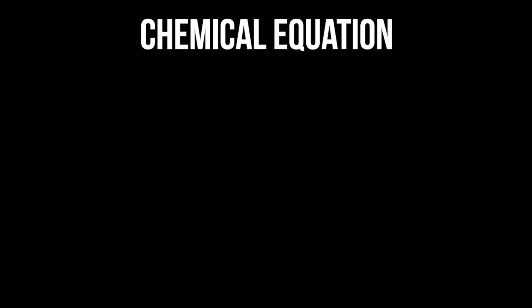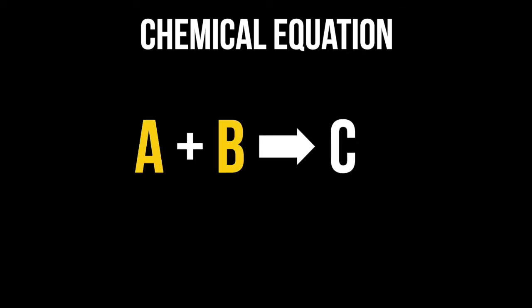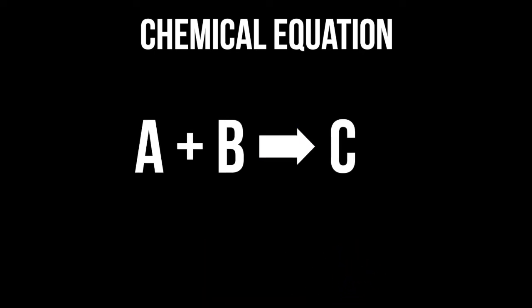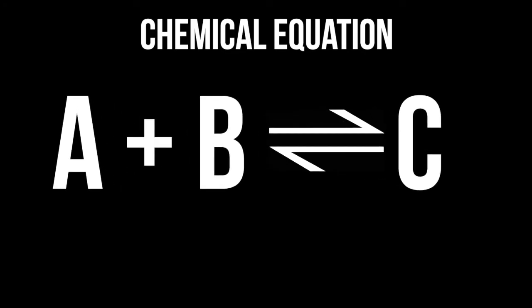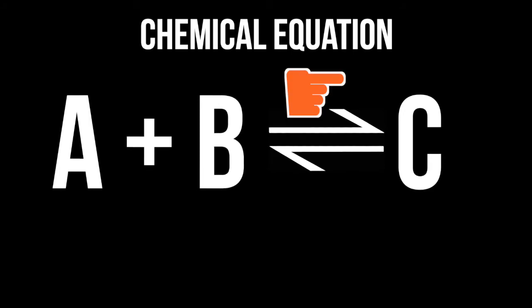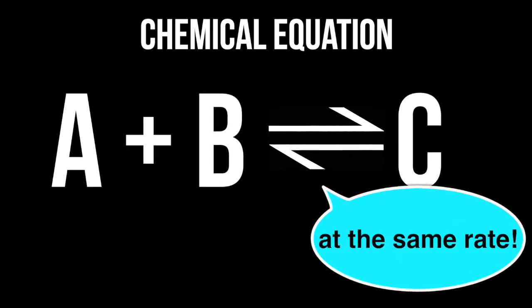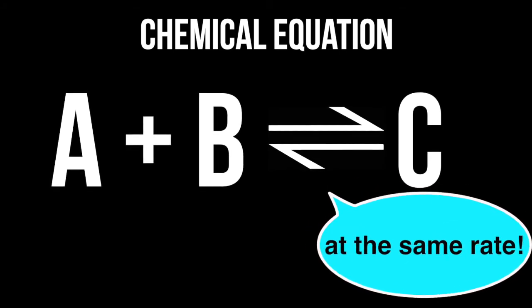Typically, chemical equations are written with reactants on the left side and products on the right side, with an arrow pointing from reactants to products. However, the reality is that a chemical reaction is at equilibrium. It means that a reaction may proceed in the forward direction or the backward direction. And at equilibrium, both forward and backward reactions occur at the same rate.